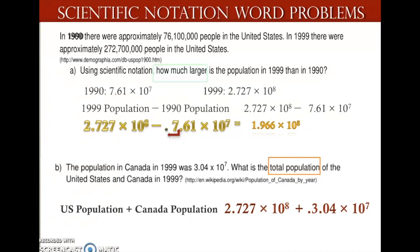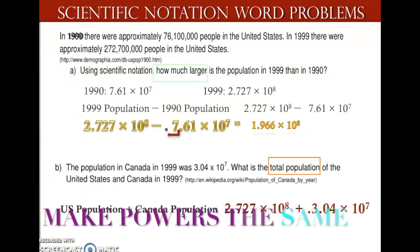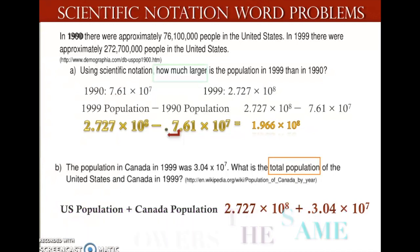When we're adding and subtracting in scientific notation, we need to make our powers the same. I am going to make my power bigger by moving my decimal one place over with my smallest power. When I move that one place over, now my powers are the same, leaving me with 3.031 times 10 to the 8th power.